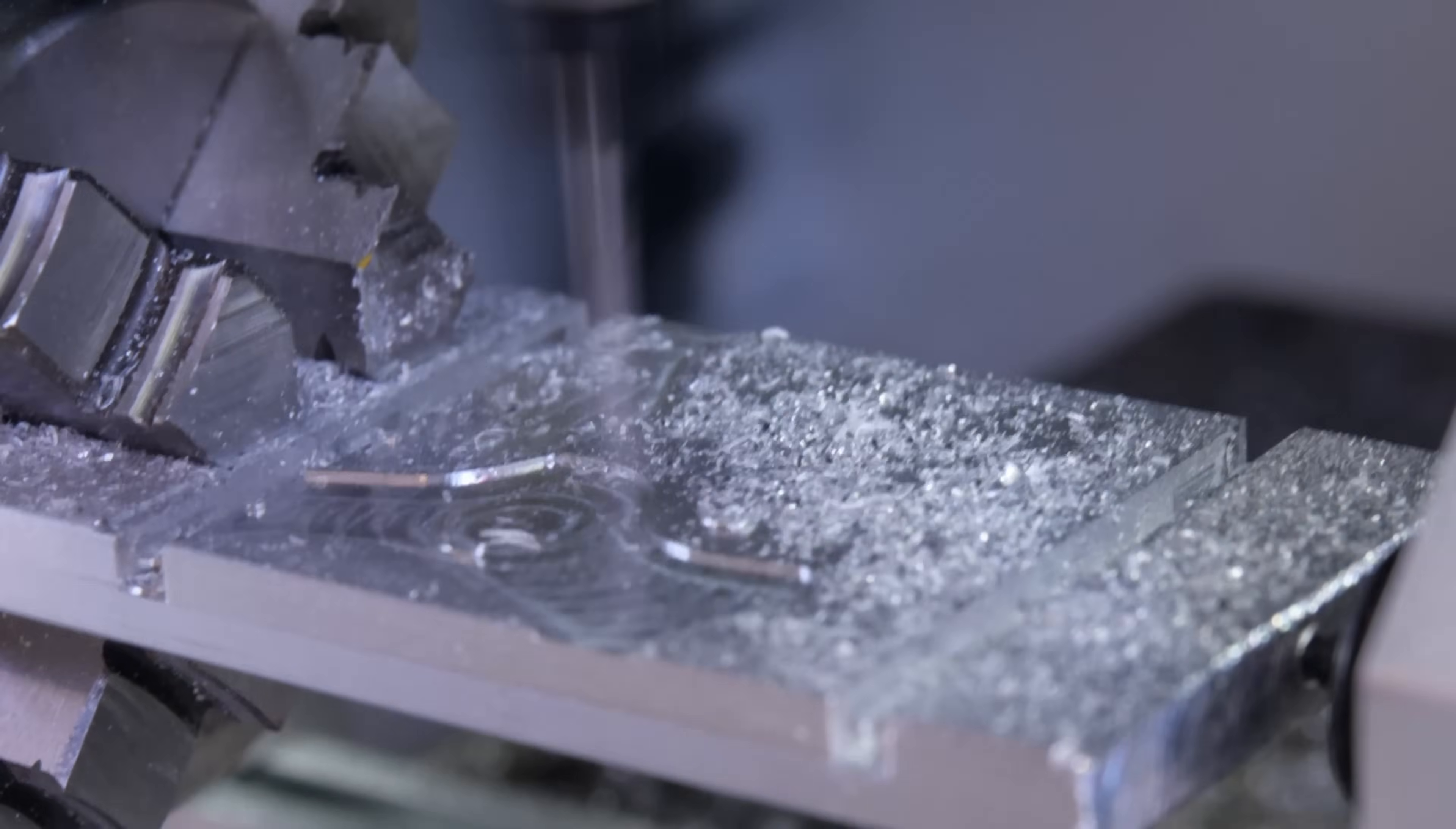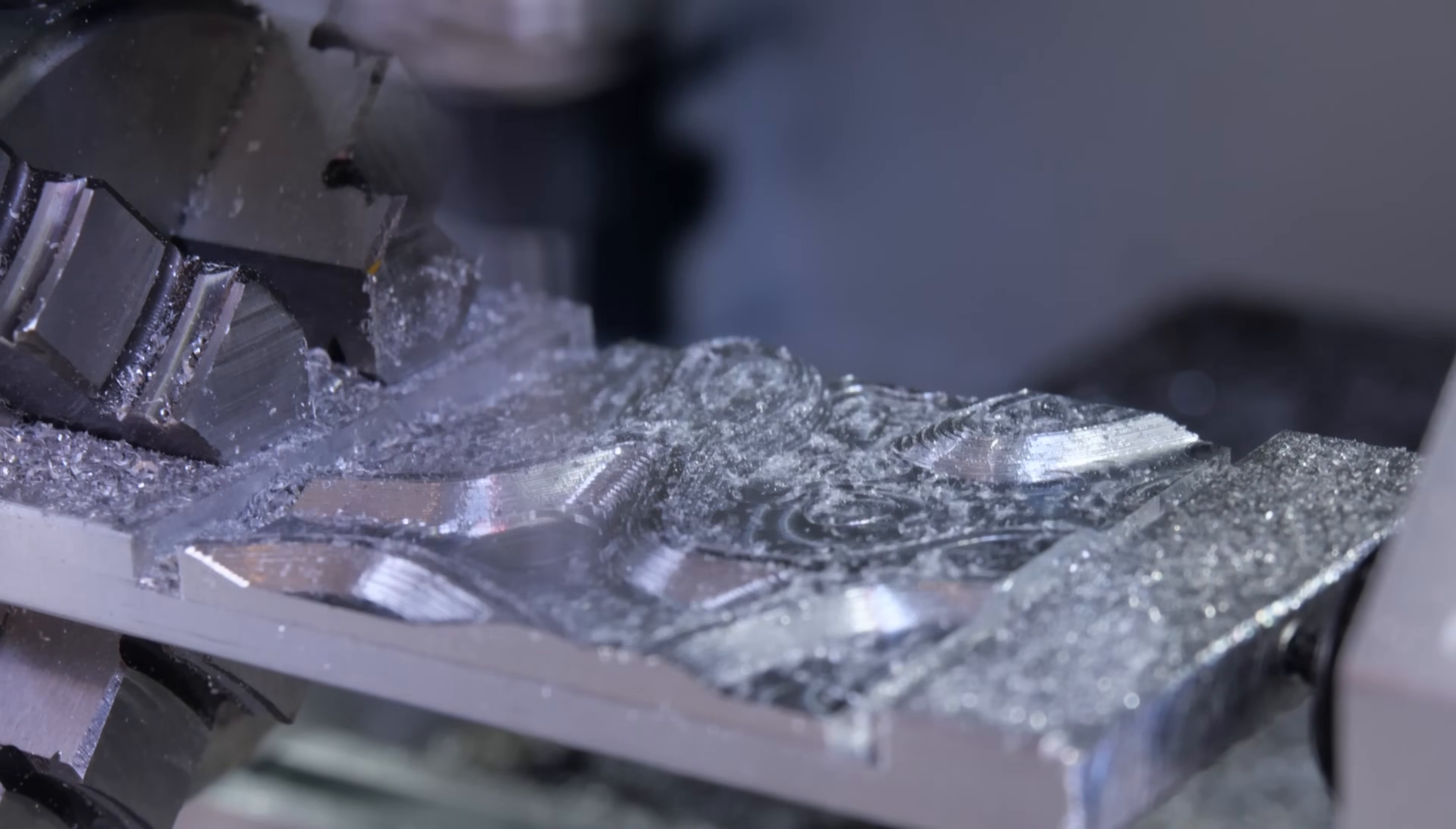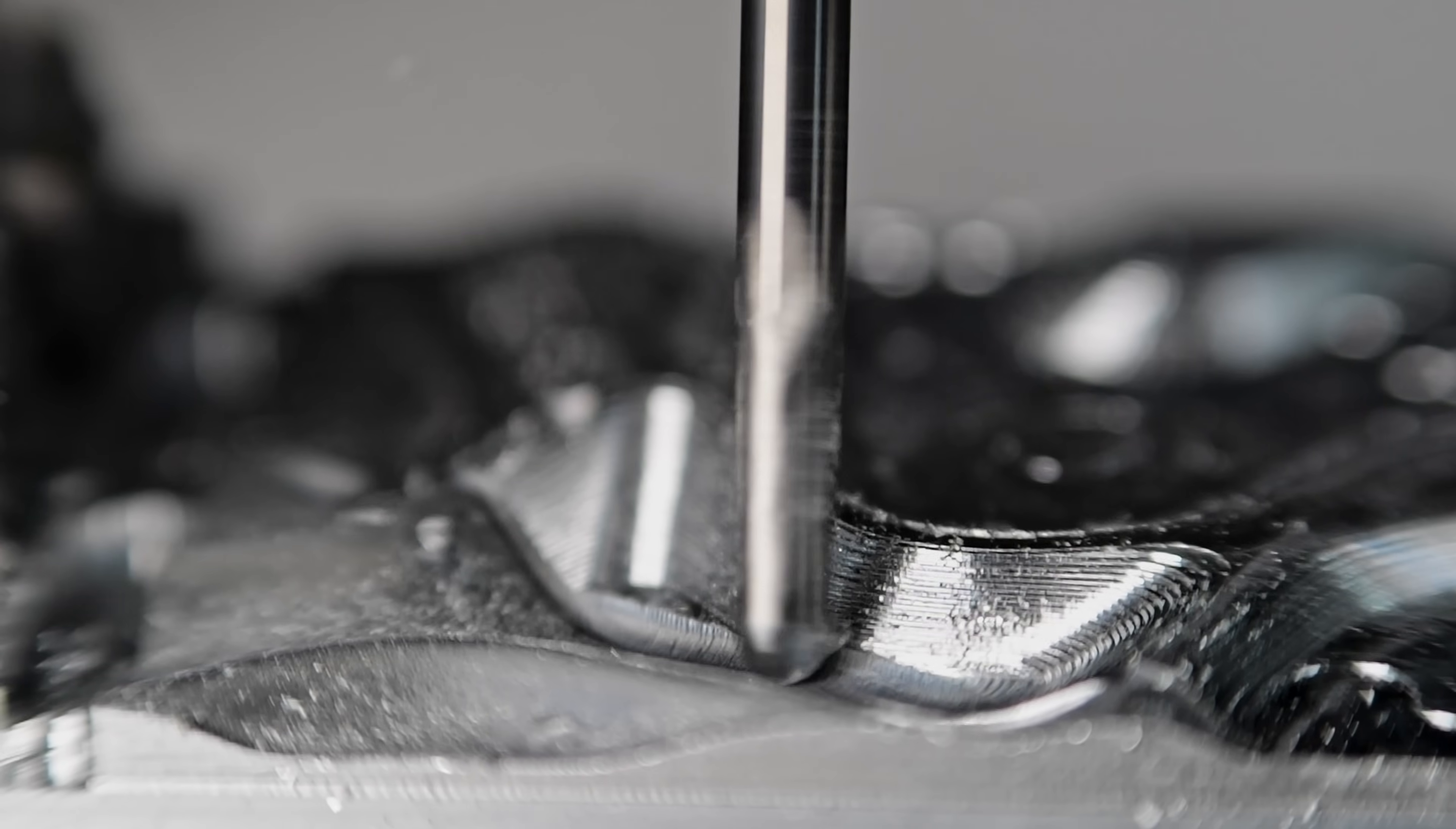So the contour toolpath and the adaptive toolpath to clear out all of the material both happen at a normal angle, with the tool perpendicular to the top of the workpiece. Then once those are done, the workpiece rotates to 30 degrees for the finishing pass. You can see with the rotated workpiece how the ball nose end mill is cutting with the edge instead of with the very tip.